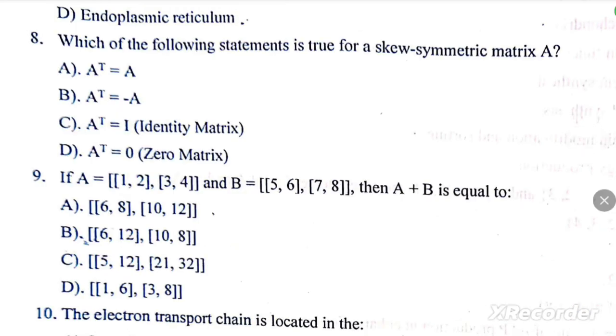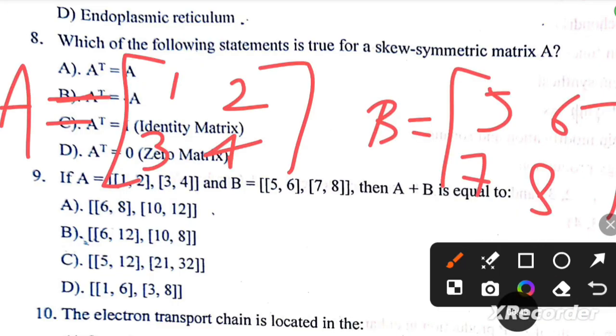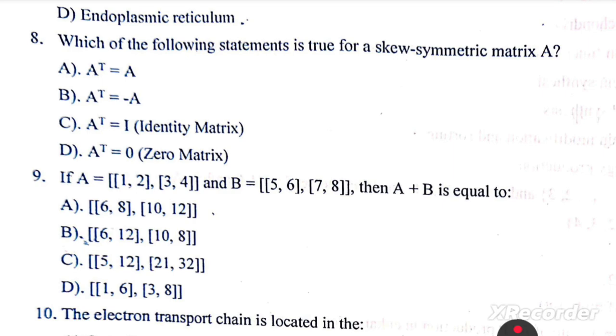Which of the following statements is true for a skew-symmetric matrix A? A transpose is negative of the matrix. Next question: if A is a matrix and B is a matrix, then A plus B is... These are two matrices, then A plus B is equal to 1 plus 5 is 6, 7, 8, 7 plus 3 is 10, and 4 plus 8 is 12. So [6, 8], [10, 12], then A plus B is equal to option A.